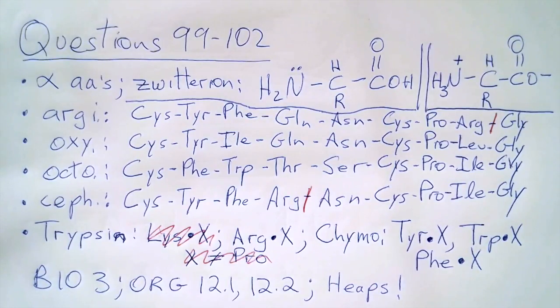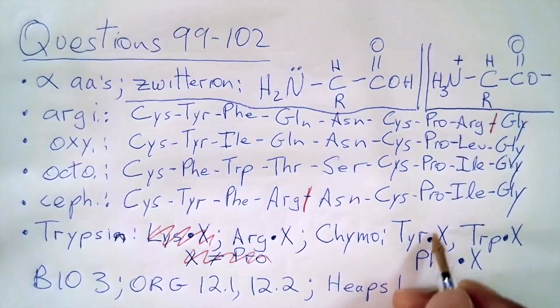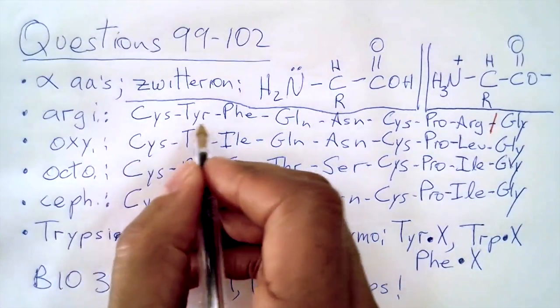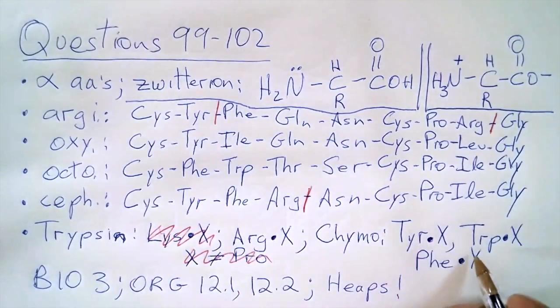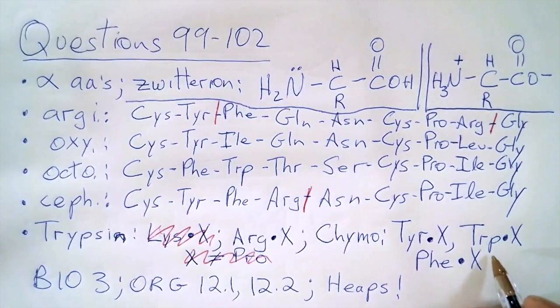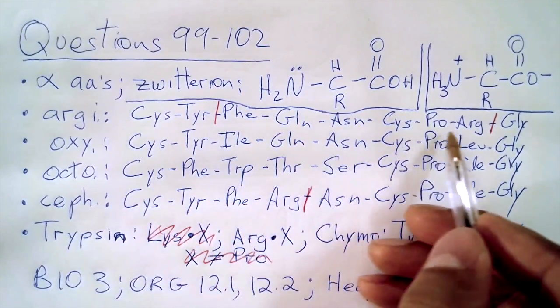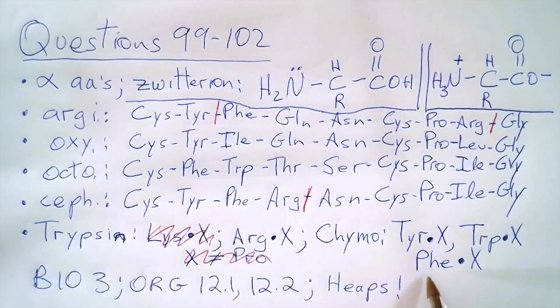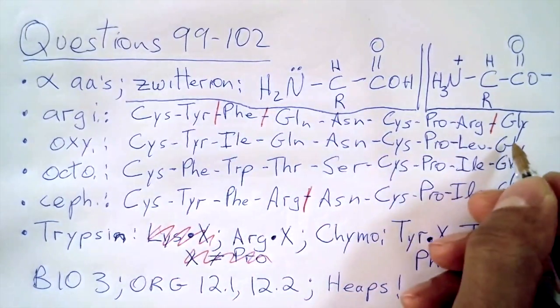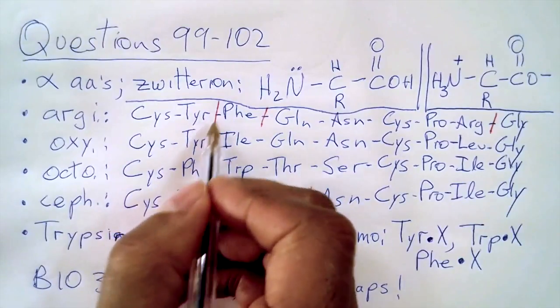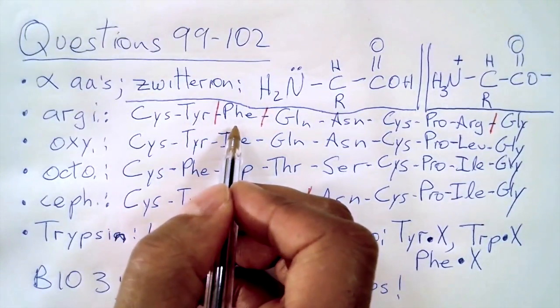Question 100: Which amino acid could be isolated when chymotrypsin facilitates the cleavage of argipressin? First I look at my rule. It cuts on the right side of tyrosine - I find tyrosine here, here's where it'll cut. There's no more tyrosine. Next, on the right side of tryptophan, I look - there is no tryptophan. Next, on the right side of phenylalanine, I look - there's one here and no more. So with chymotrypsin, one amino acid will be isolated: phenylalanine. And so the answer is A.